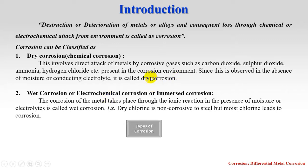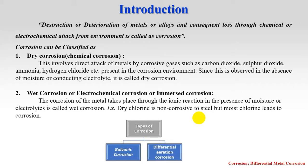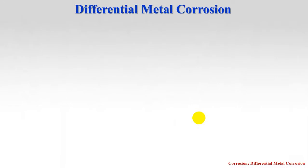Now let us move on to the types of corrosion. Corrosion is classified into various types, but in your syllabus there are only two types: galvanic corrosion and differential aeration corrosion. Today we shall discuss differential metal corrosion.